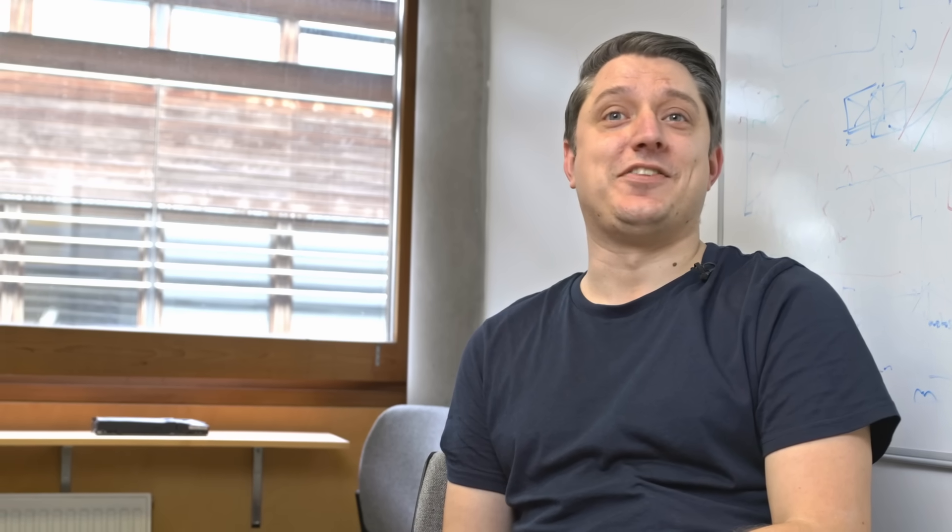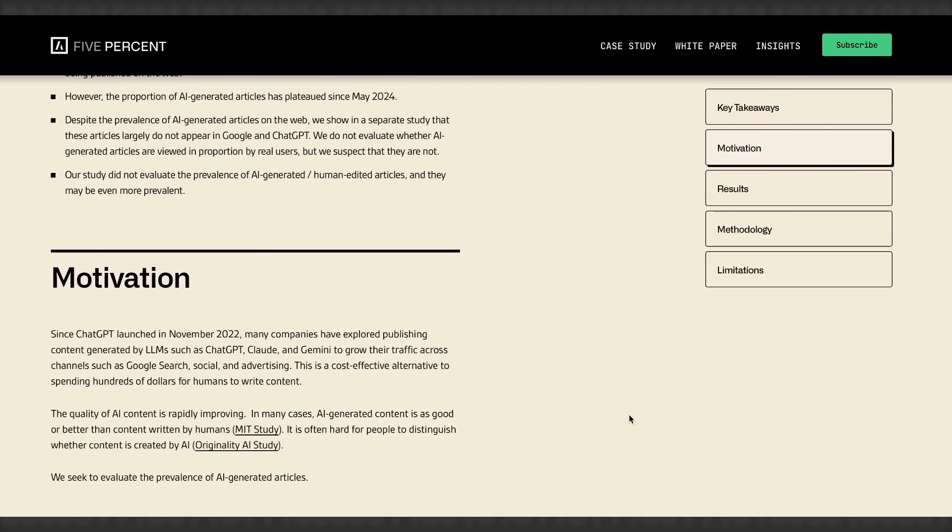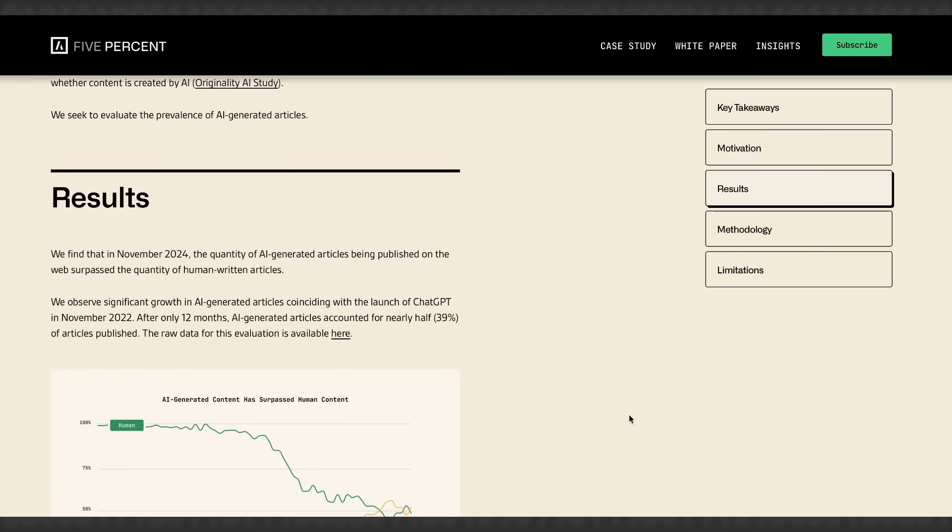We're going to look at the wonderful world of AI slop, which I actually quite like as a term because it's exactly what I think of it. There was an interesting article that came up recently where some researchers had calculated that approximately 50% of the new articles appearing online are now generated by AI.